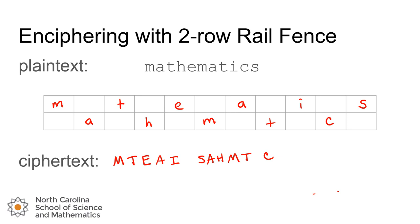If you don't have enough characters to make a full group of five, that's okay — just write as many as you can until you run out. So we have the cipher text message M-T-E-A-I-S-A-H-M-T-C.